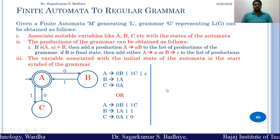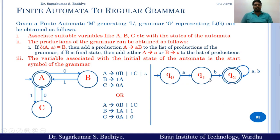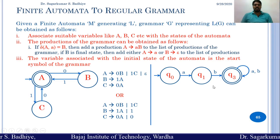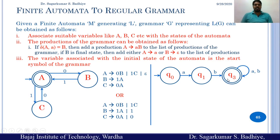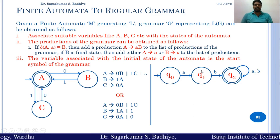Now consider another example: suppose this finite automata is given wherein Q0 on A goes to Q1, Q1 on B goes to Q3, where Q3 is a final state, and Q3 on A and B goes to Q3 itself. According to the rules, we first represent all these states with capital alphabets. So Q0 will be represented as A, Q1 as B, and Q3 as C.